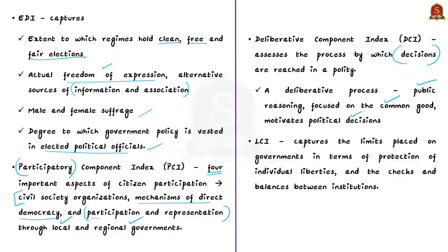Finally, the liberal component index captures the limits placed on governments in two key aspects: first, the protection of individual liberties, and second, the checks and balances between institutions. Based on all these principles and indices, the Liberal Democracy Index for the year 2020 is compiled.